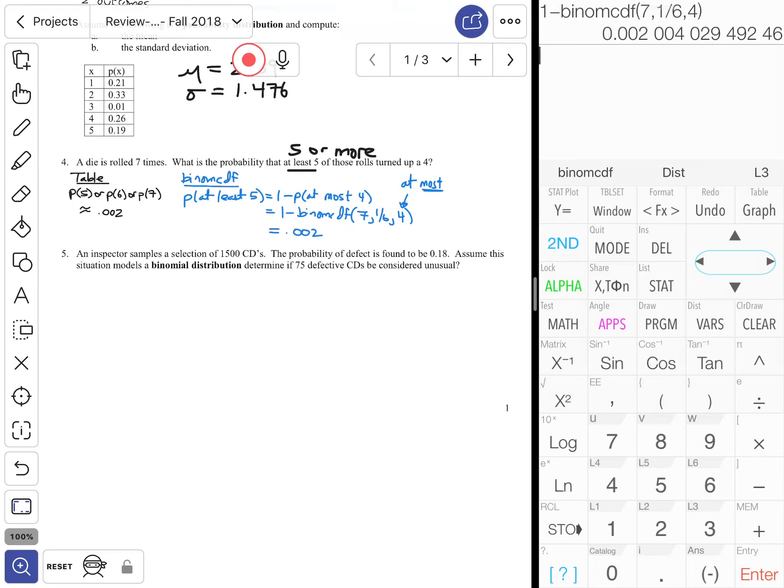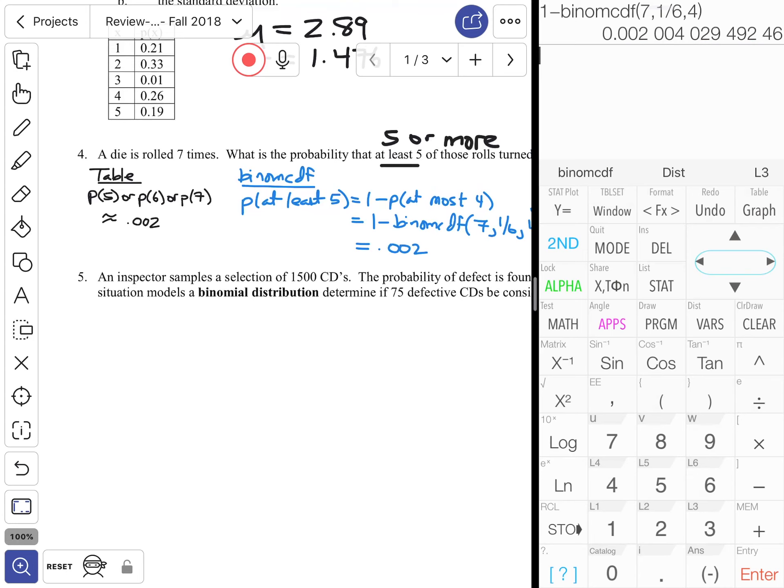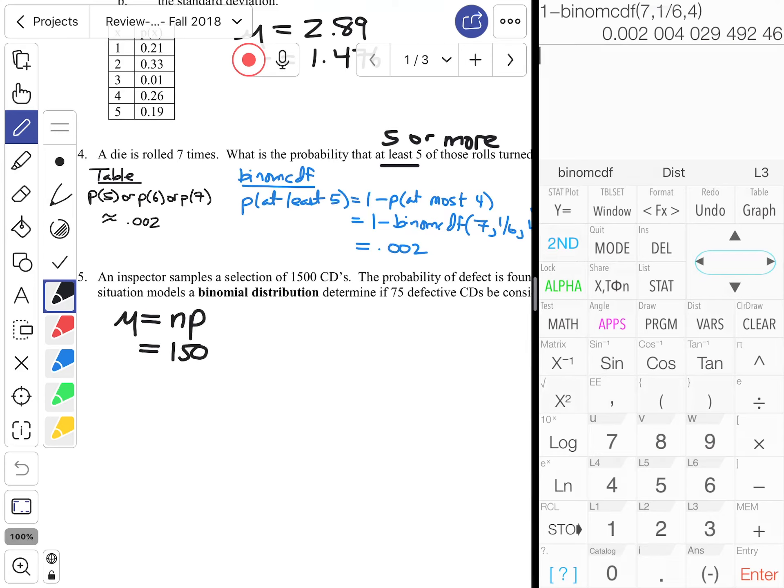Number five: inspector samples a selection of 1500 CDs, the probability of defect is found to be 0.18. Assume that it's a binomial distribution, determine if 75 defective CDs would be considered unusual. So I need the mean: 1500 times 0.18, talking about 270.